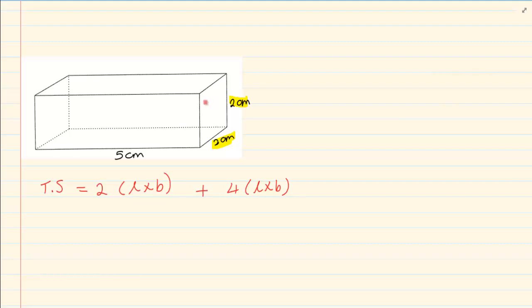So if we take the base it would be two into two times two. Then we have got plus four. Now if this is two then we know the top is two and we know that a cross is also two. So what are the values we are looking for? The five and the two. So we have four into five times two.